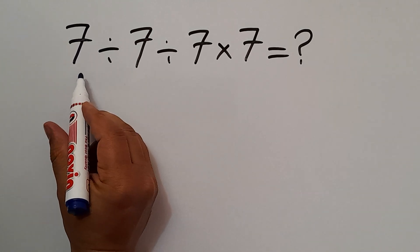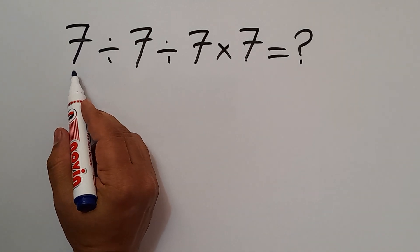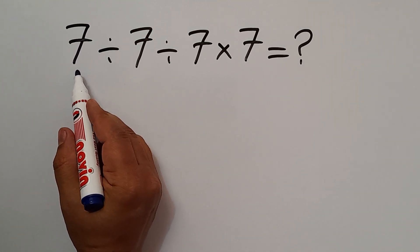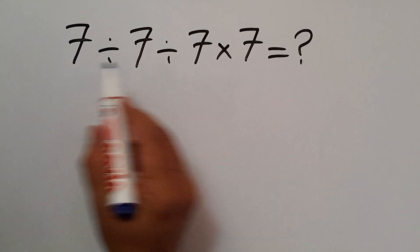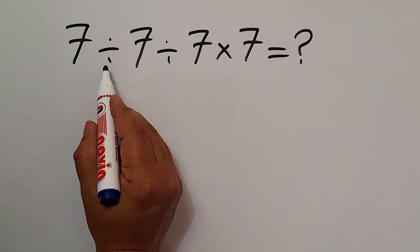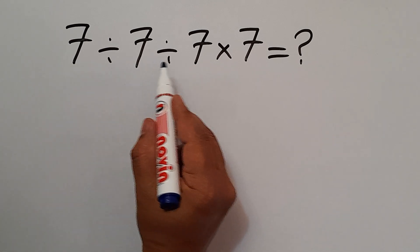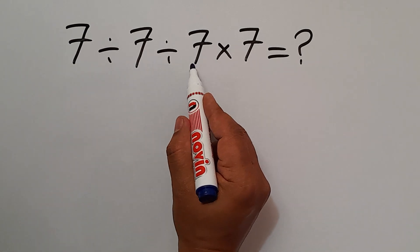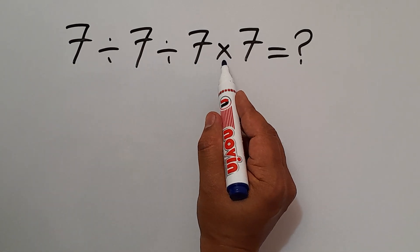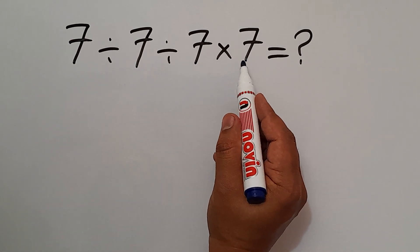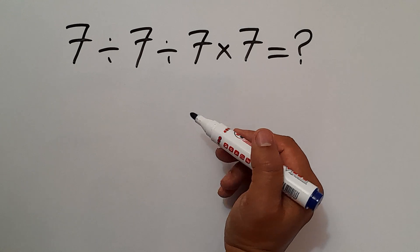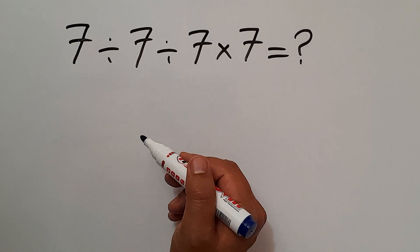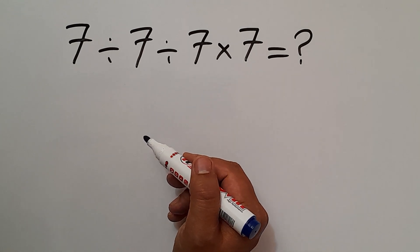Hey guys, welcome to Math Joy! In this video we want to find the value of this expression: 7 divided by 7 divided by 7, then times 7. Are you ready to solve? Let's go!